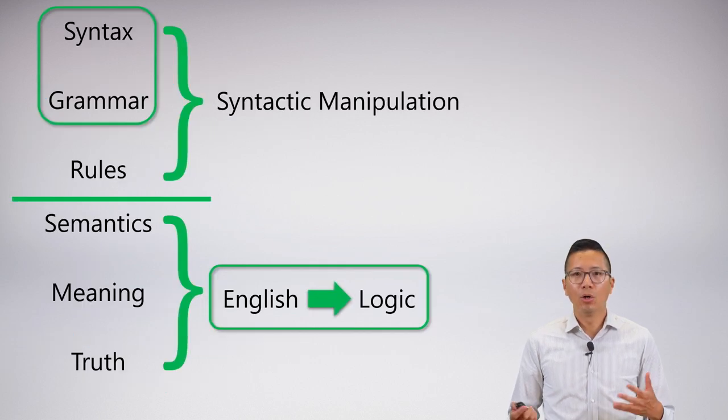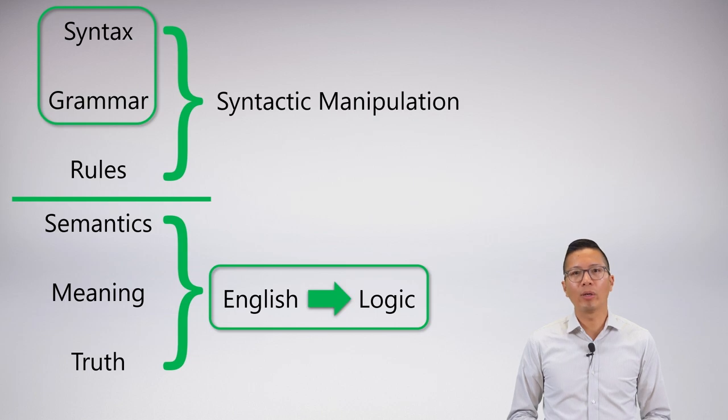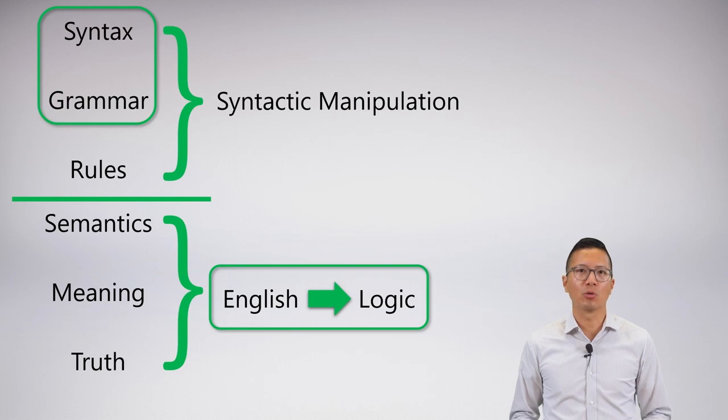So where are we now? Well, we've completed this, but you can still see what we need to do. We need some rules. We need semantics so that we can uncover meaning and truth and so on.